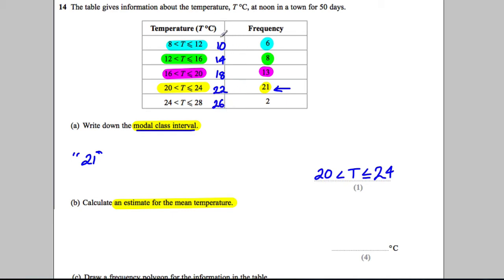So we assume that there are 6, 10 degrees that happen. We take the midpoint here. There are 8, 14 degrees that happen. There are 13, 18 degrees that happen. There are 21, 22 degrees that happen. There are 2 times that 26 degrees happen.